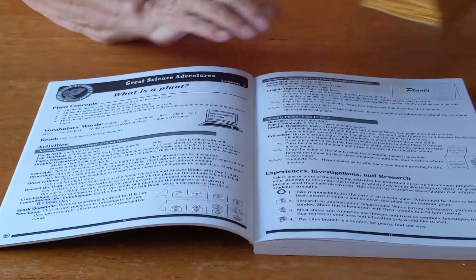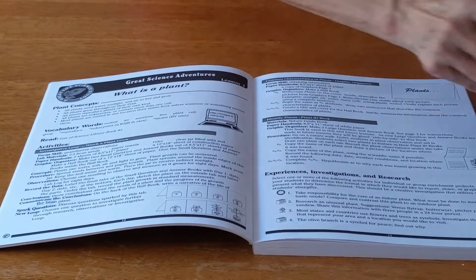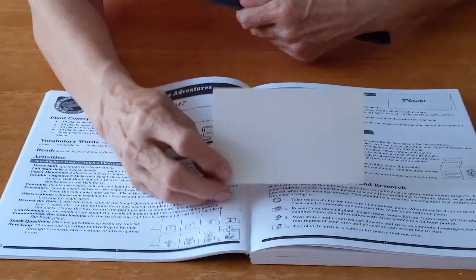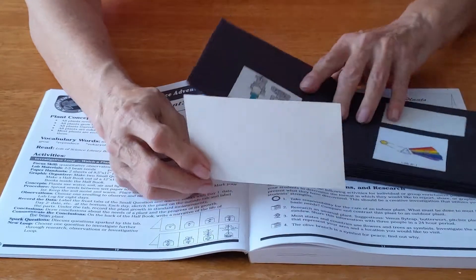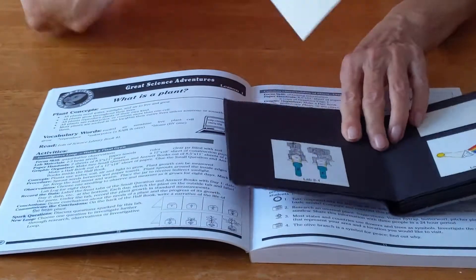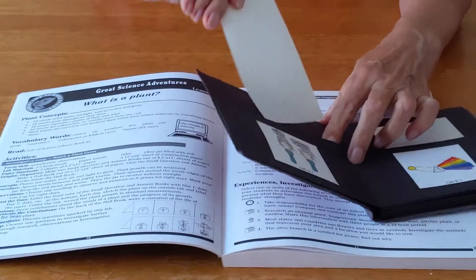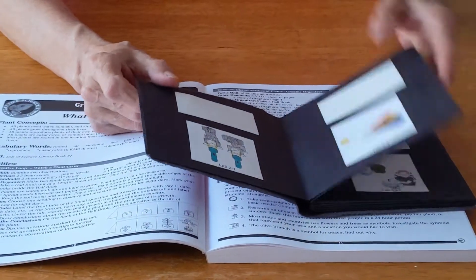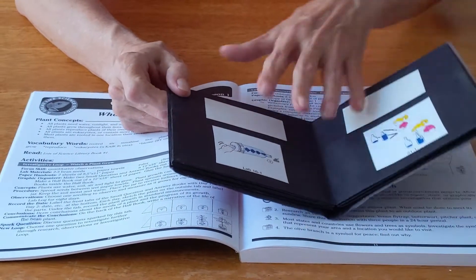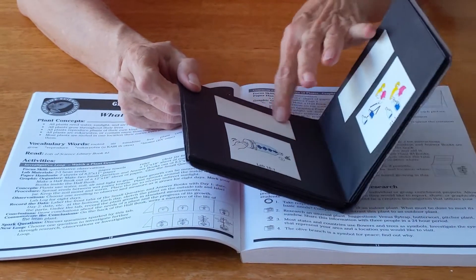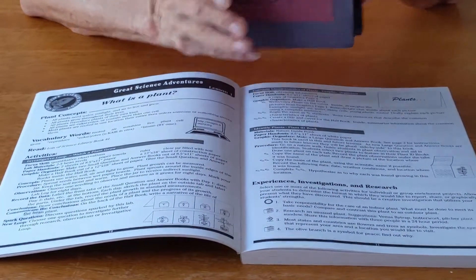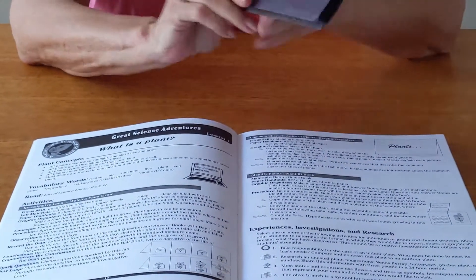As you proceed with the lab, your student will record data on index cards or sheets of notebook paper that you've cut out that will fit inside the lab book. Each lesson may not have a lab, but for each lab you will create a book that the students can record their observations in. At the end of the program all the books can be glued together, covered, and then you have it all in one place.